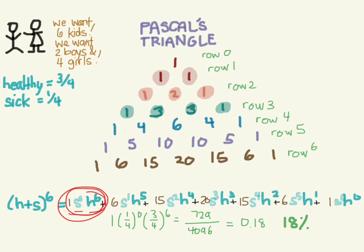That's the binomial theorem. On your boards, they probably won't make you calculate this, but understand what goes into it: two independent events with their own probabilities, a chosen number of trials as your exponent, terms counting down for each event, and coefficients from Pascal's triangle. Watch this video a couple of times if you need to, and leave comments below if you have questions.